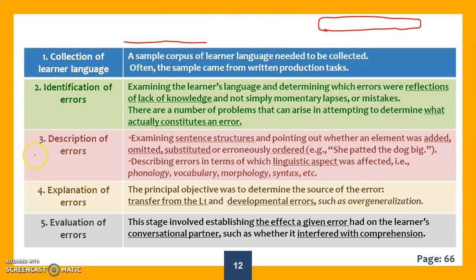Corder followed five steps of error analysis. During the session, our live session, I will give you an example that we will analyze and follow these steps. Number one: collection of learner language. They would get a corpus, that is a sum of written products of the learner, to know what their original language level is. Identification of errors: then they would identify the errors. Are the errors because of lack of knowledge or are they just momentary forgetfulness or mistakes? And there are numbers of problems that can arise to determine what actually constitutes an error. What is an error?